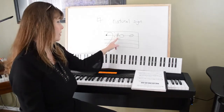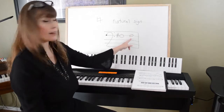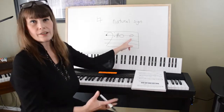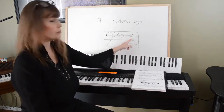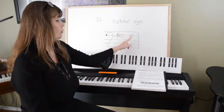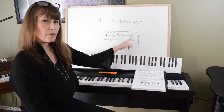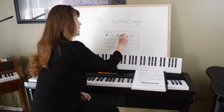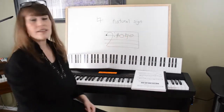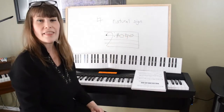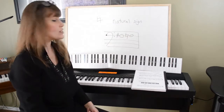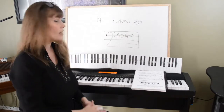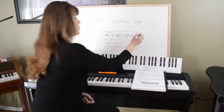So if I saw this F and then another F, I would play another F sharp. But if I don't want to play an F sharp there, I would need to use a natural sign, and that cancels any sharps or flats I had in that measure.